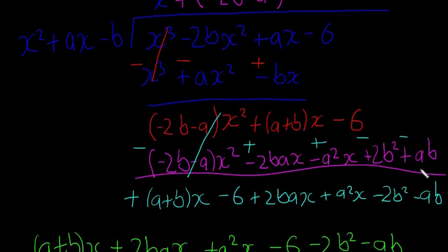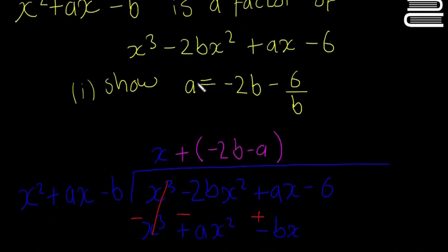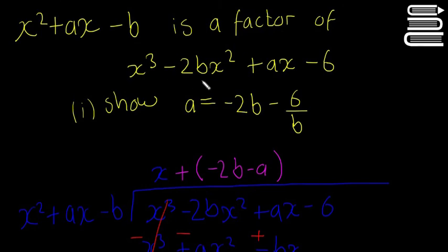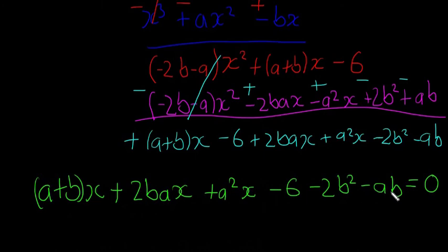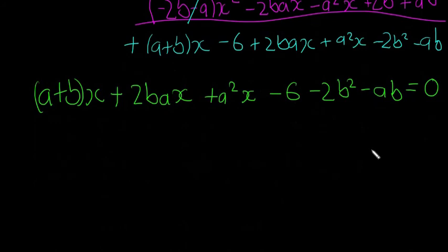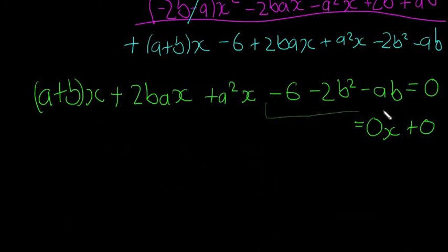And we know that if x squared plus ax minus b is a factor of this expression, the remainder should be zero — like we would have seen in most of our other examples. So we know that x squared plus ax minus b is a factor of this, therefore this has to equal zero. Obviously we can't tell if it's zero because there are a's and b's, but if we found the values of a and b, they'd all cancel and we'd be left with zero. So I'm going to write equals zero.